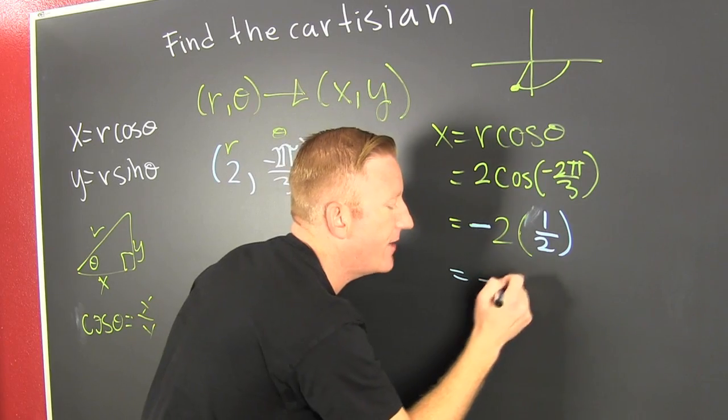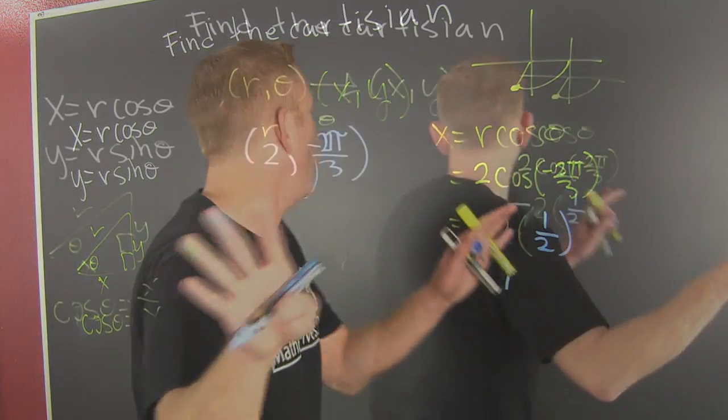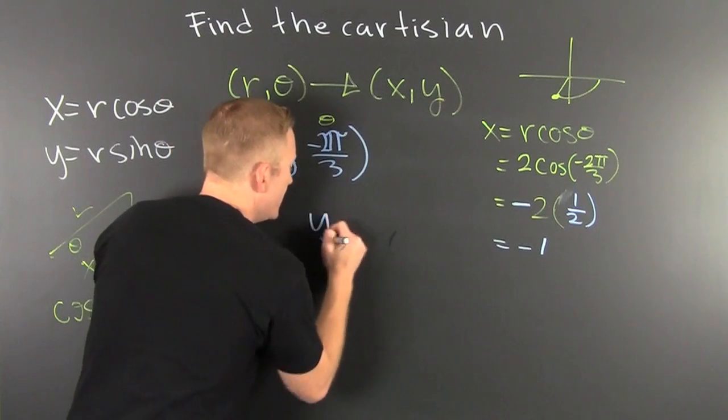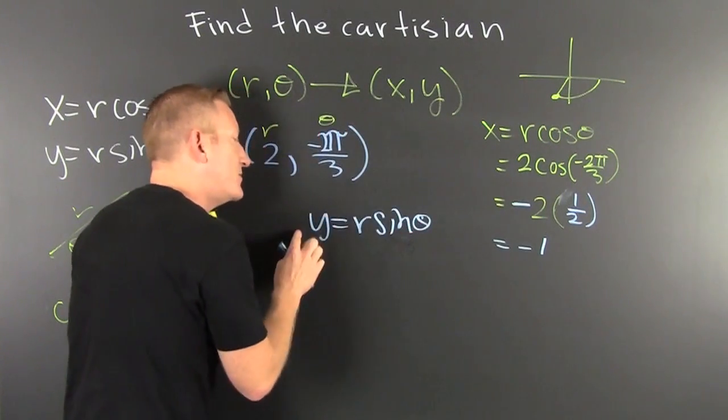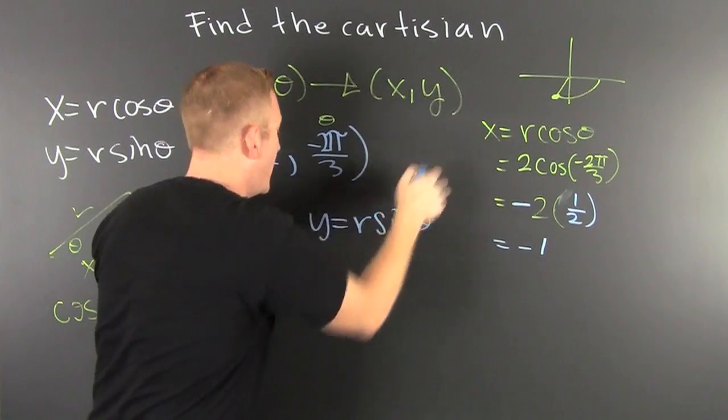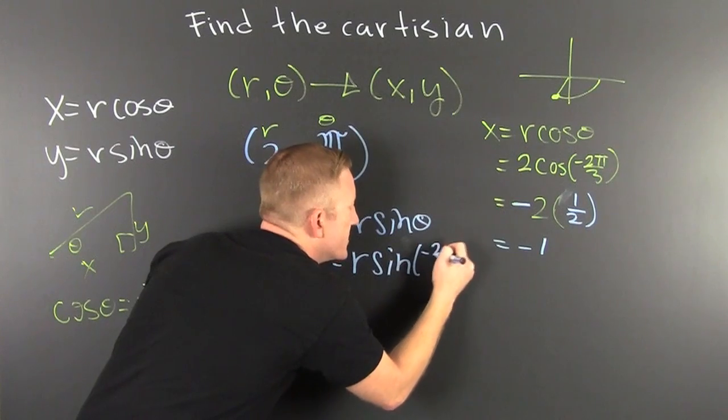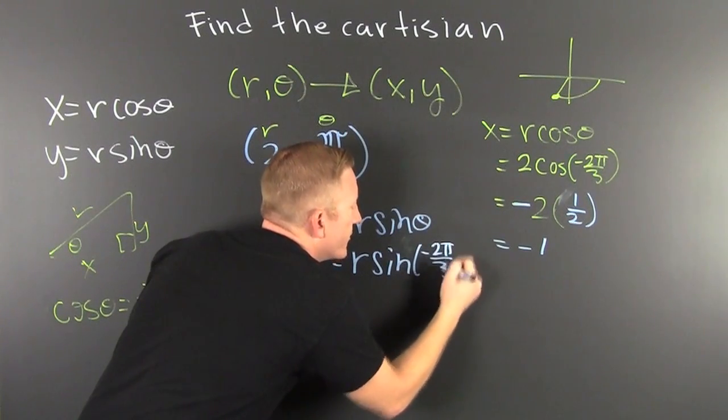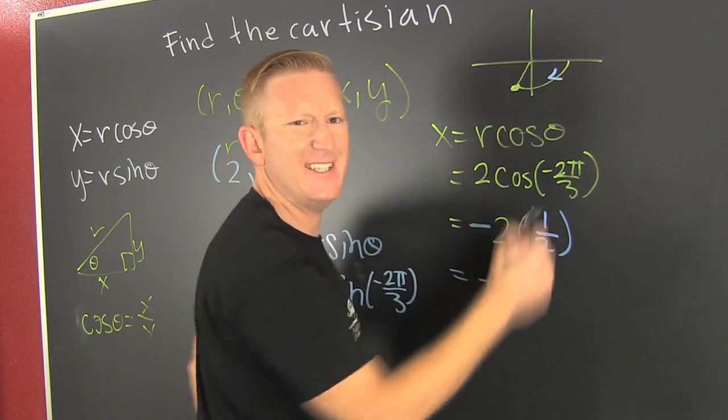I have a minus 1. Now I have to go and get the one for y. y is equal to r sine theta. Cosine governs x, sine governs y. So then what's next? This is r and the sine of minus 2π over 3.